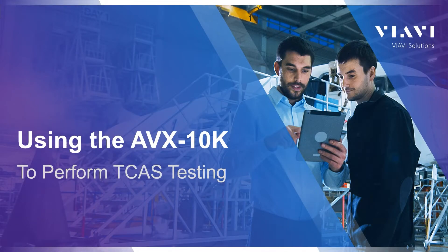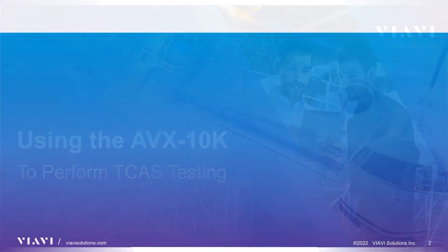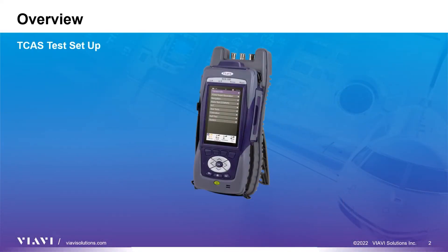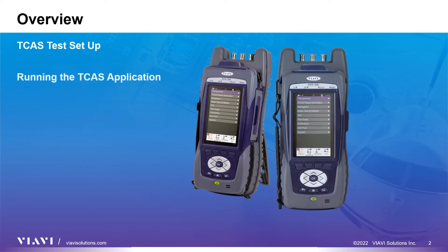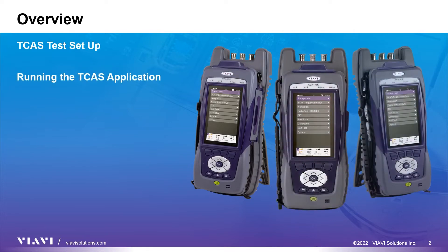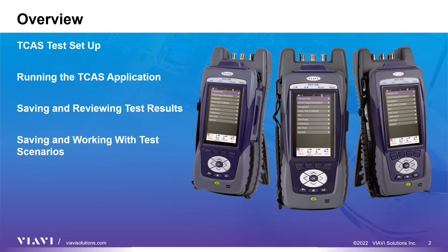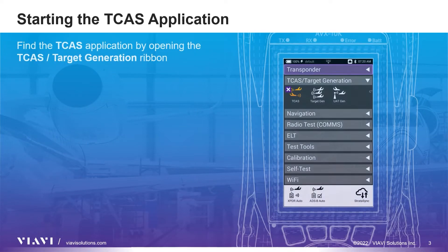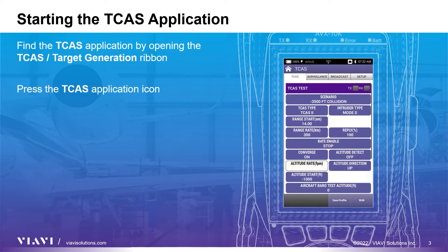Hello and welcome to this training video on setting up and performing a TCAS dynamic intruder test using the AVX-10K Flightline test set from Viavi Solutions. With the TCAS application, you can set up one dynamic intruder to trigger audible advisories and paint a target on the TCAS unit under test. In this video, we will discuss the settings and procedures for TCAS testing, look at saving test generator parameters and viewing the results, and also look at saving custom scenarios. After turning on your test set, open the TCAS target generation ribbon and select the TCAS application.